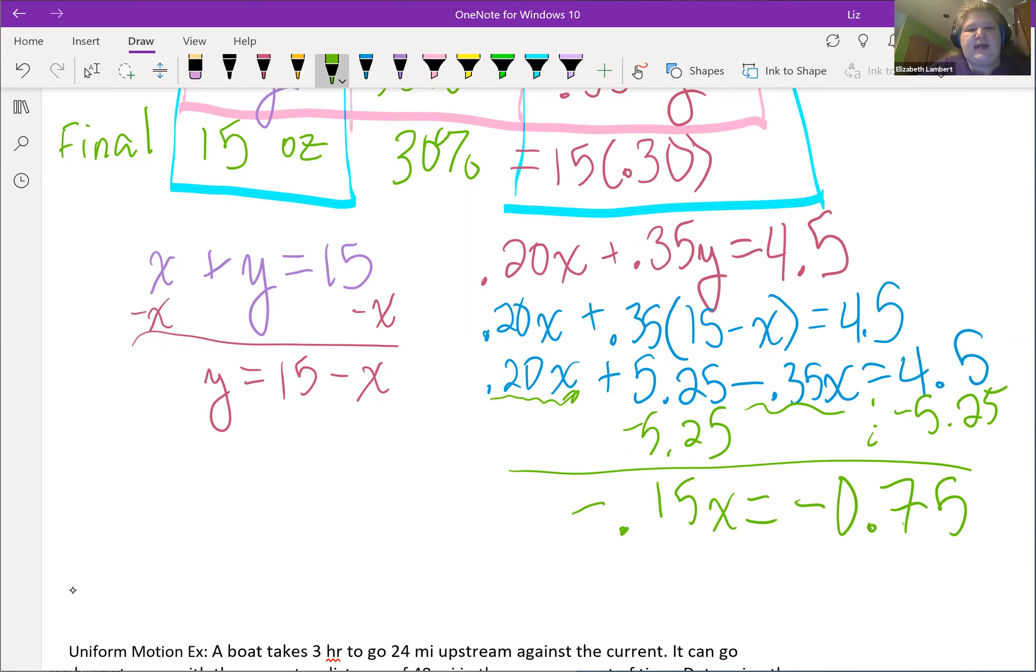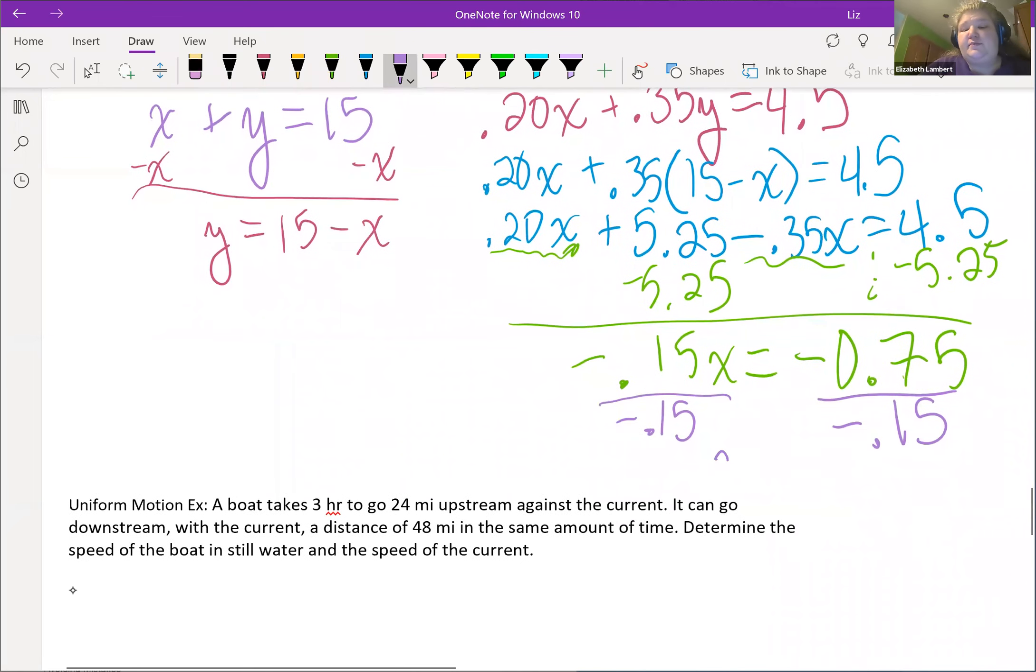But we are going to divide by a negative, so this will turn out to be positive, so we're okay. And 75 and 15 actually do divide nicely. Five. So all that work for five.